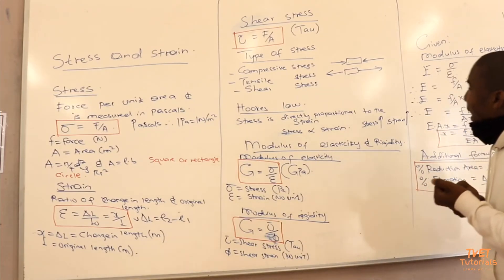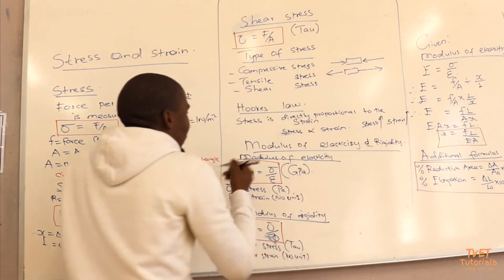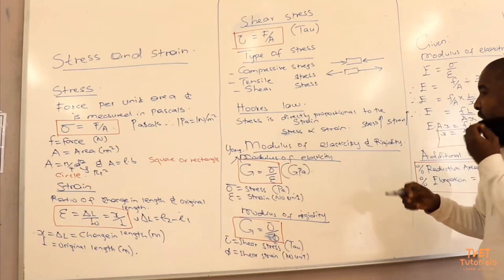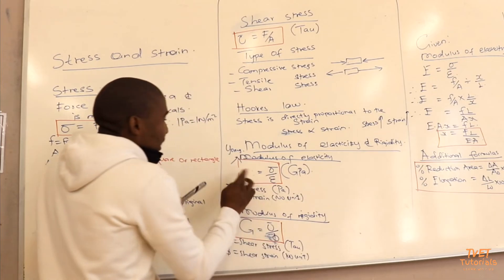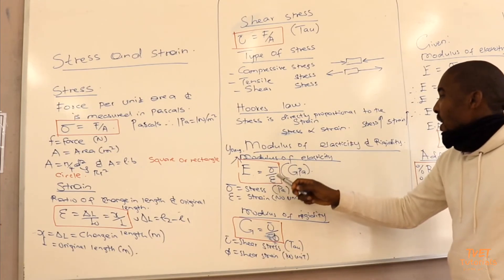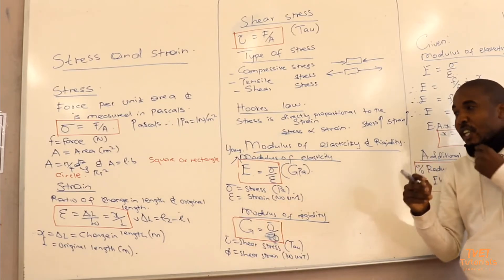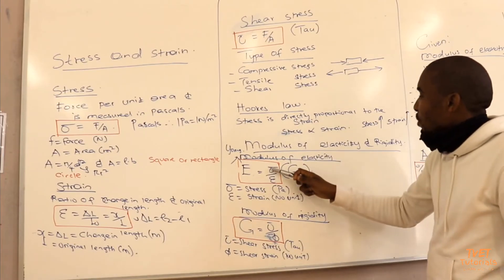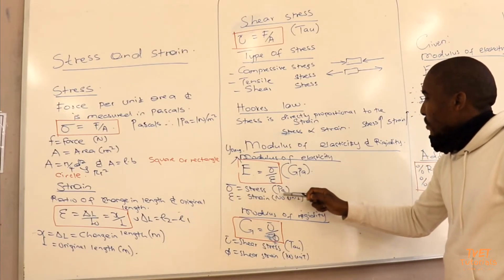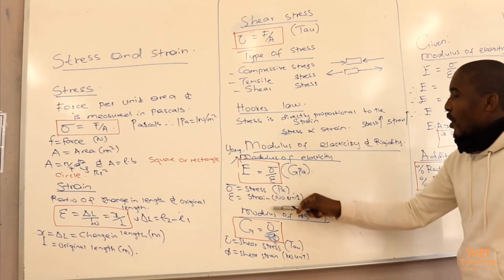Let's move to the modulus of elasticity, sometimes called Young's modulus. The modulus of elasticity E is given by stress over strain, measured in gigapascals (GPa). The limit of proportionality is found at the modulus of elasticity. The stress is in Pascals and the strain has no unit, so the modulus of elasticity is in Pascals.